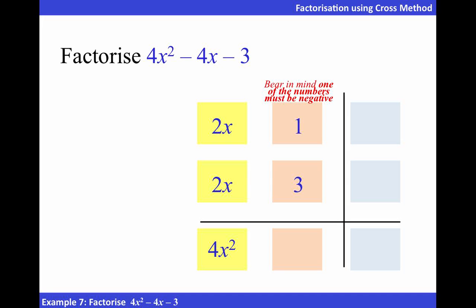Let's carry on to do the cross multiplication. 2x times 3 will give us 6x and 2x times 1 will give us 2x. The sum of these two terms should result in negative 4x.